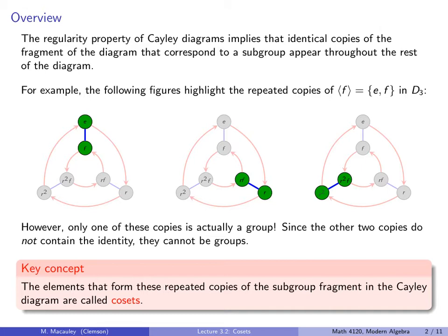The key concept in this lecture is that the elements forming these repeated copies of the subgroup fragment in the Cayley diagram — meaning this set, and this set, and also this one — are called cosets.